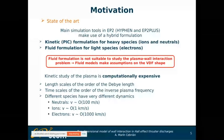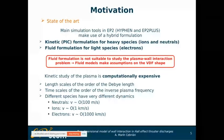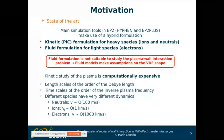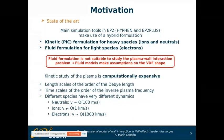Fluid formulation is not suitable to study plasma wall interaction because it already makes assumptions about the velocity distribution function shape. However, kinetic simulation of plasma is computationally very expensive because we have to resolve very small length scales, very small time scales, and all species have very different dynamics, so to reach a steady state we must resolve electron time scales while waiting for ions and neutrals to also reach steady state.